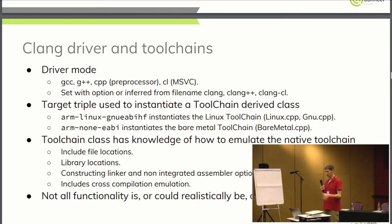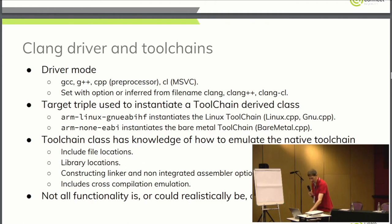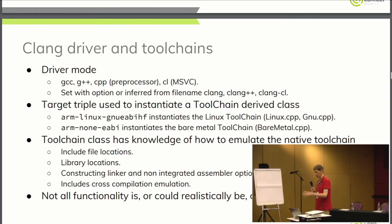Unfortunately, because there are so many options and it's all in code, the possibilities make it almost undocumented. I had the goal of writing down the rules and putting them on a slide, and I gave up on that very quickly. So if things go wrong: use the -v output to dump what Clang is doing. If that doesn't work, go look in the toolchain class to figure it out.